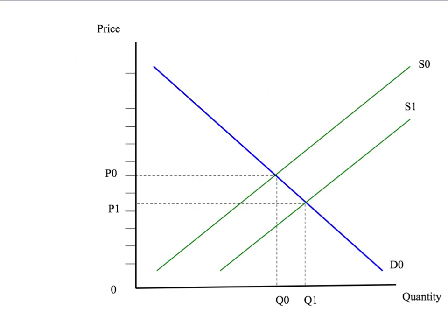To see the issue, let's use a simple example where the supply curve shifts to the right — for example, because of an improvement in technology that's reduced the cost for producers and sellers of the product. As the supply curve moves to the right, our prediction is that the equilibrium price will fall and the quantity traded will increase. That's our comparative static prediction as we move from our original equilibrium to our new equilibrium.